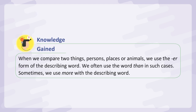Knowledge gained: When we compare two things, persons, places, or animals, we use the ER form of the describing word. We often use the word 'than' in such cases. Sometimes we use 'more' with the describing word.